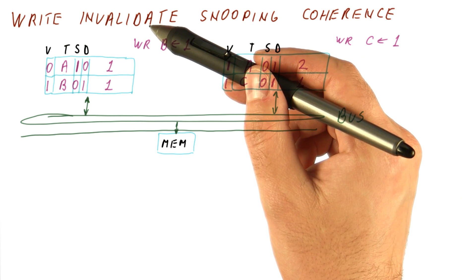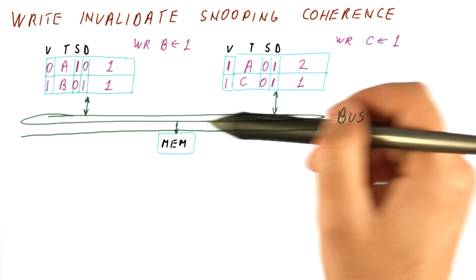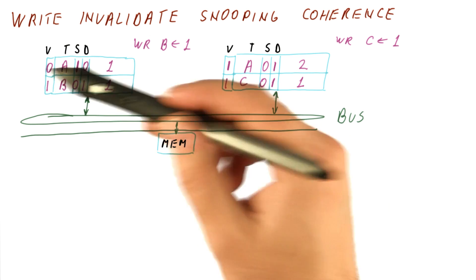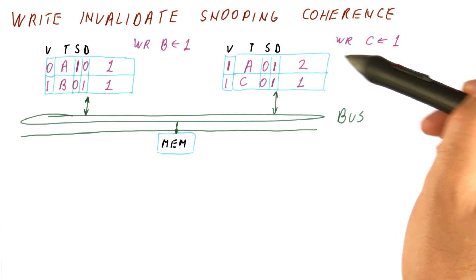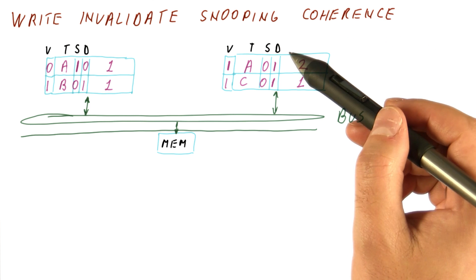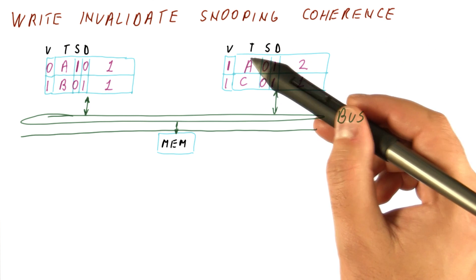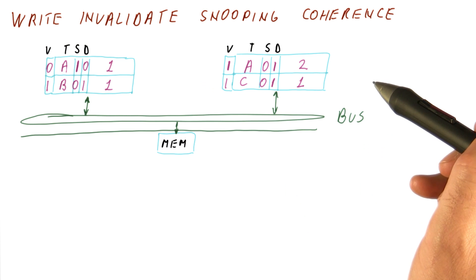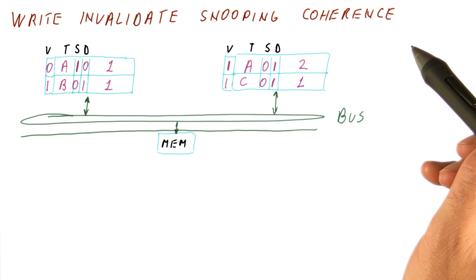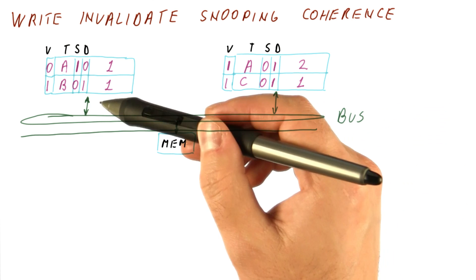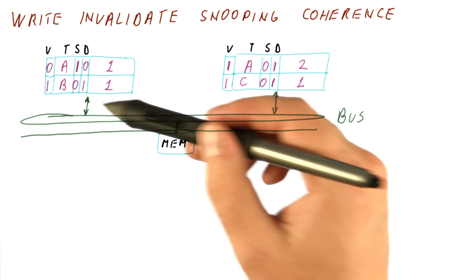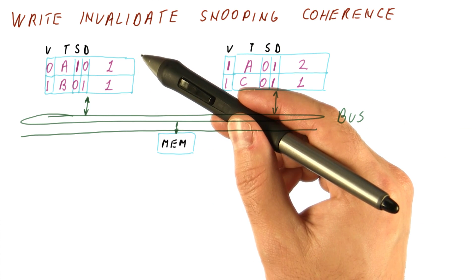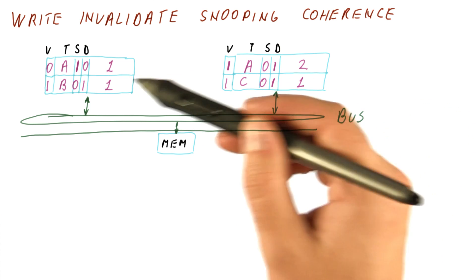For shared blocks, we get different behavior. Write update tends to result in more hits but does more broadcasts if we repeatedly update. Write invalidate generates a miss on all readers after a write, but allows local writes after the first broadcast. With write update, coherence property two is maintained by updating all copies so they return the new value. With write invalidate, the same property is ensured by invalidating all other copies, forcing them to fetch the new version. Either way, reads will get the new version of the data.